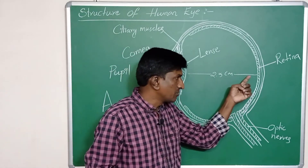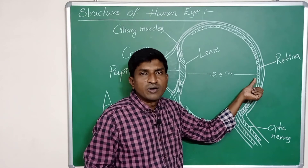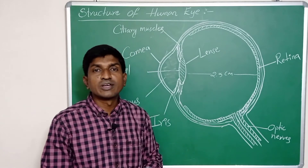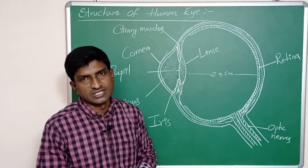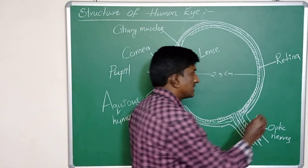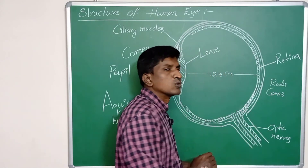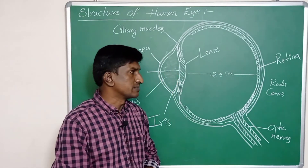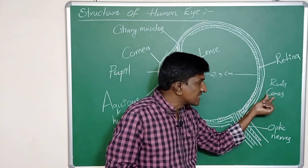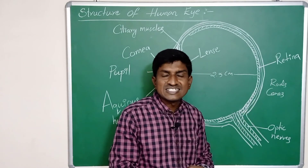The retina is made up of a delicate membrane which has 125 million receptors. These are called rods and cones. The cones detect the color of the image, and the rods detect the intensity of the light.